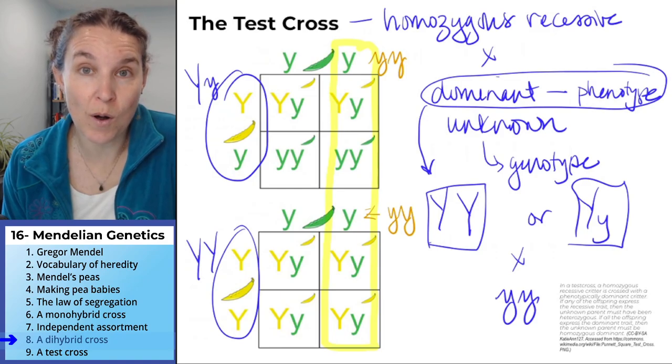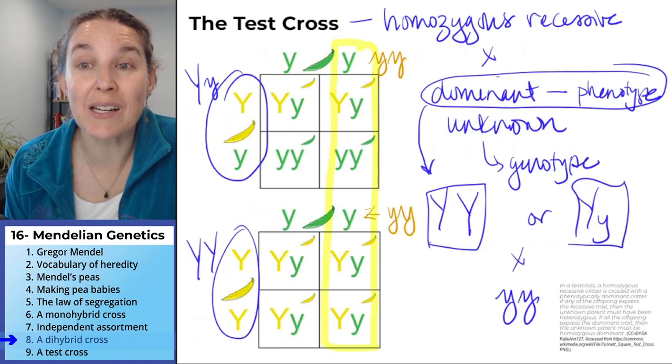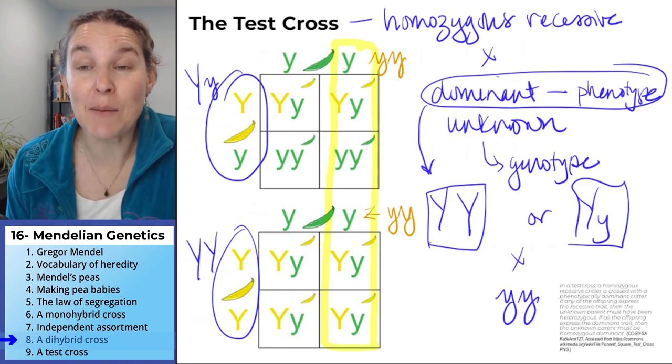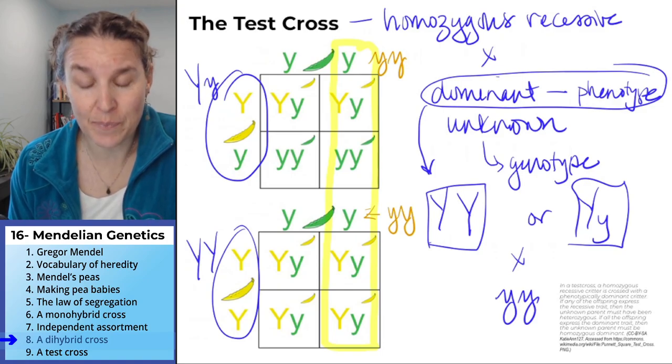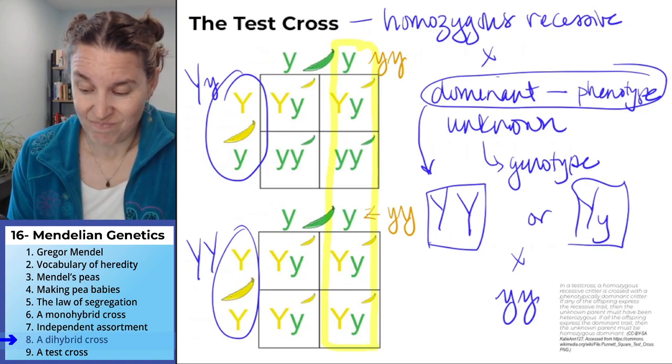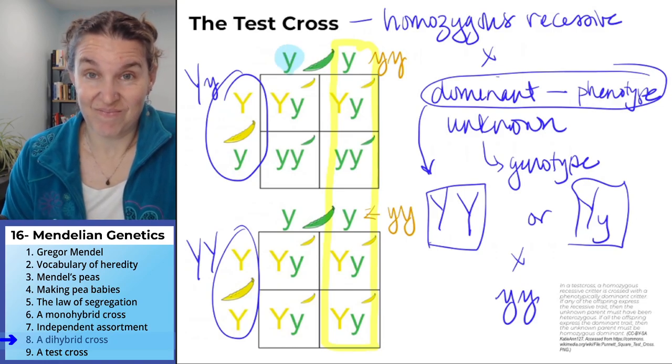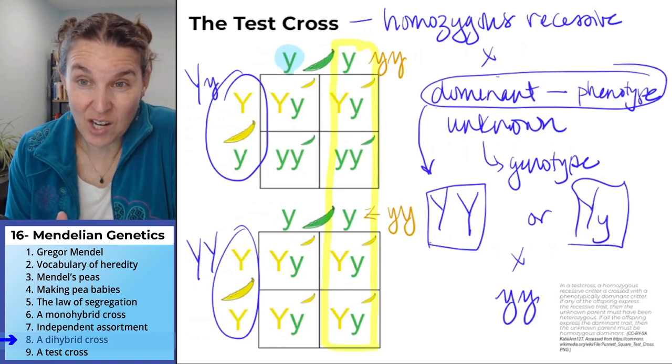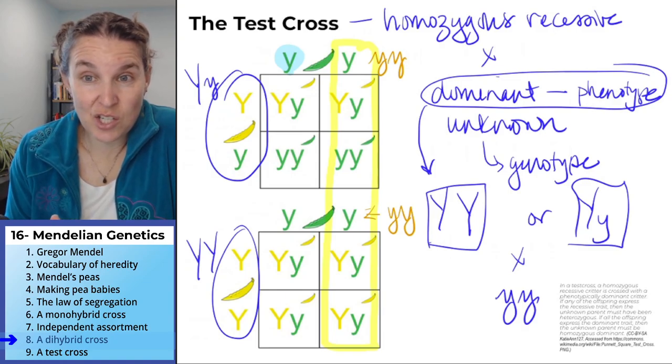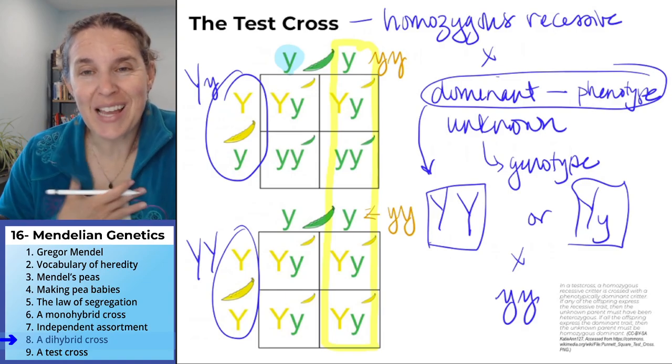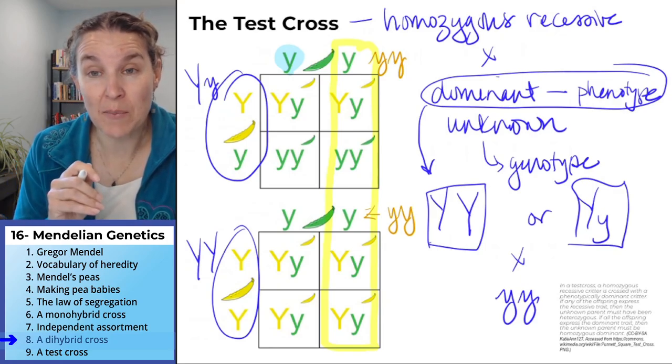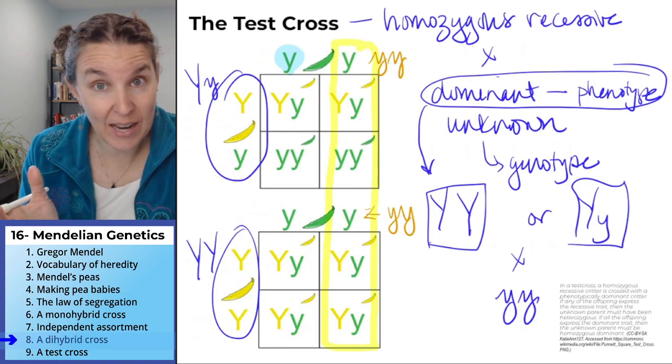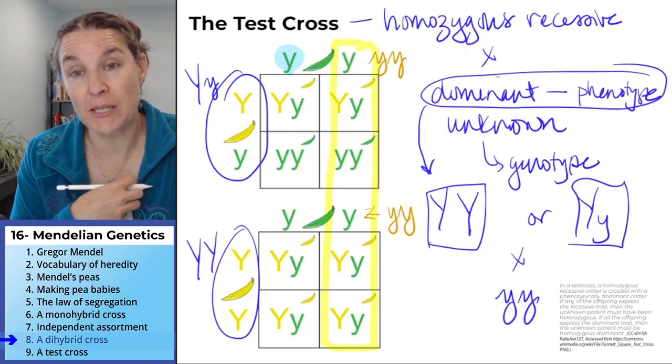Sometimes it's nice to have four boxes, but you don't need them. That second box is extra work because you only have one possible gamete from the homozygous recessive parent. I like to save time, and I just figure out what my possible gametes are going to be, and then I save time and only put those possible gametes in.